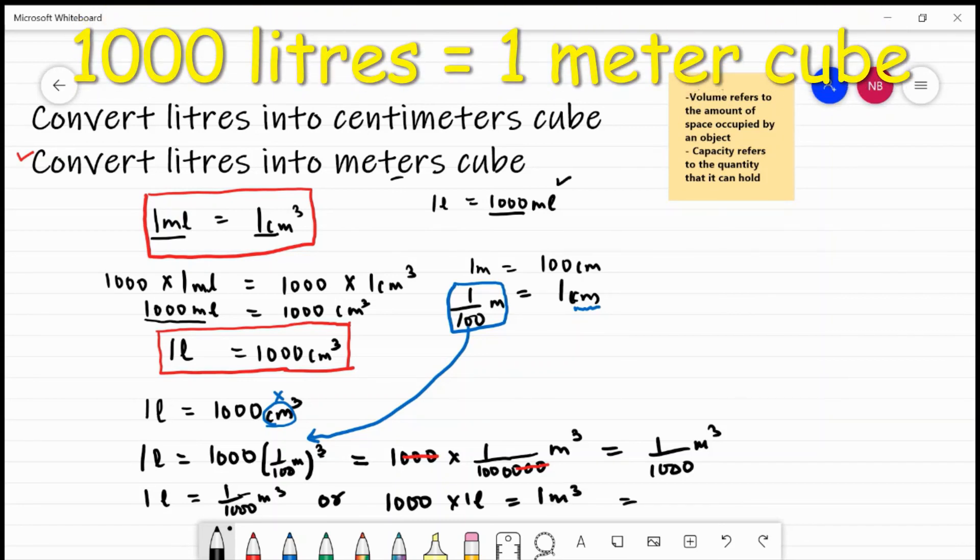Or finally, you can say one thousand litres is equal to one metre cube. So this is the third formula that we have learnt.